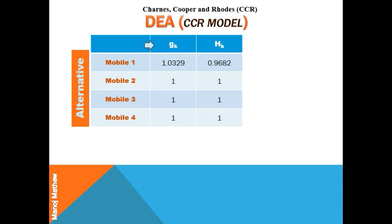In the CCR model, a DMU is considered efficient if it achieves a score of 1. So in this example, mobile 2, 3, and 4 are efficient, and we can select either of those three DMUs or alternatives. That's it — have a nice day. Please do subscribe to my channel and press the bell icon so that you get notified whenever I upload a new video. Bye.